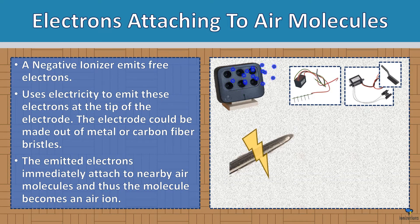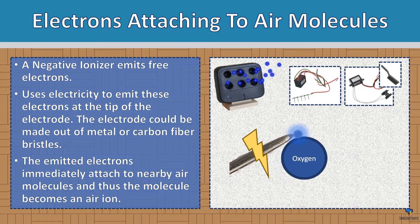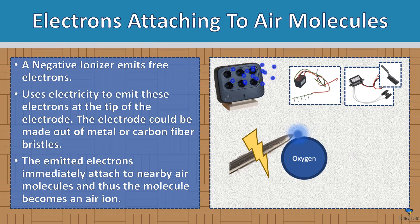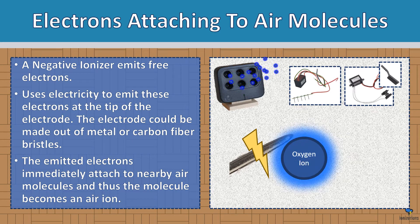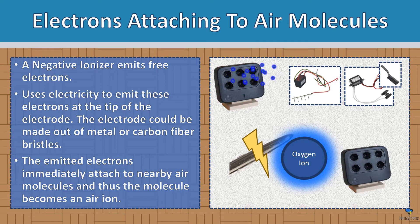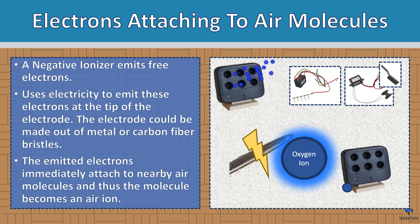Here you can see the needle tip. An electron attaches to the oxygen molecule, and the oxygen molecule becomes an ion. As the oxygen molecule goes near the ionizer, it becomes ionized and comes out as an ion.